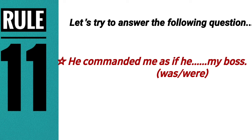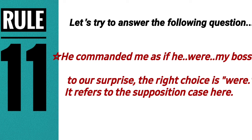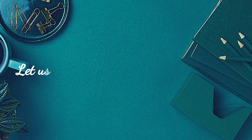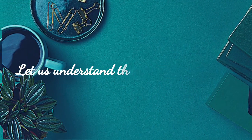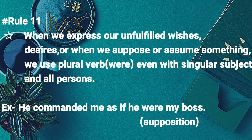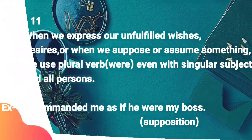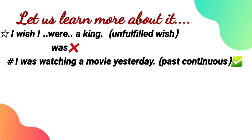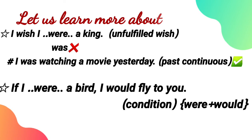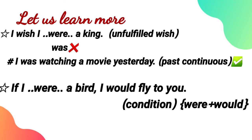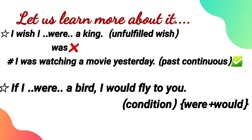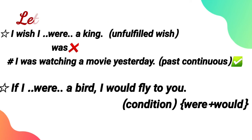The eleventh rule concerns supposition and unfulfilled wishes. For example: 'He commanded me as if he were my boss' — the correct choice is 'were,' not 'was.' When we express unfulfilled wishes, desires, or suppositions, we use 'were' even with a singular subject. For example: 'I wish I were a king' is correct. But 'I was watching a movie yesterday' is correct for a past continuous sentence. In conditionals: 'If I were a bird, I would fly' uses 'were' plus 'would.'